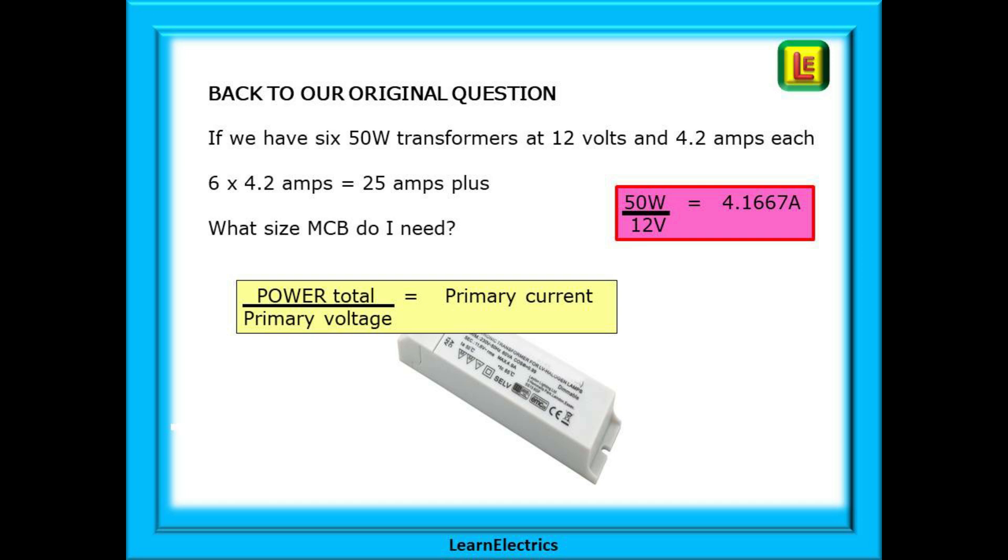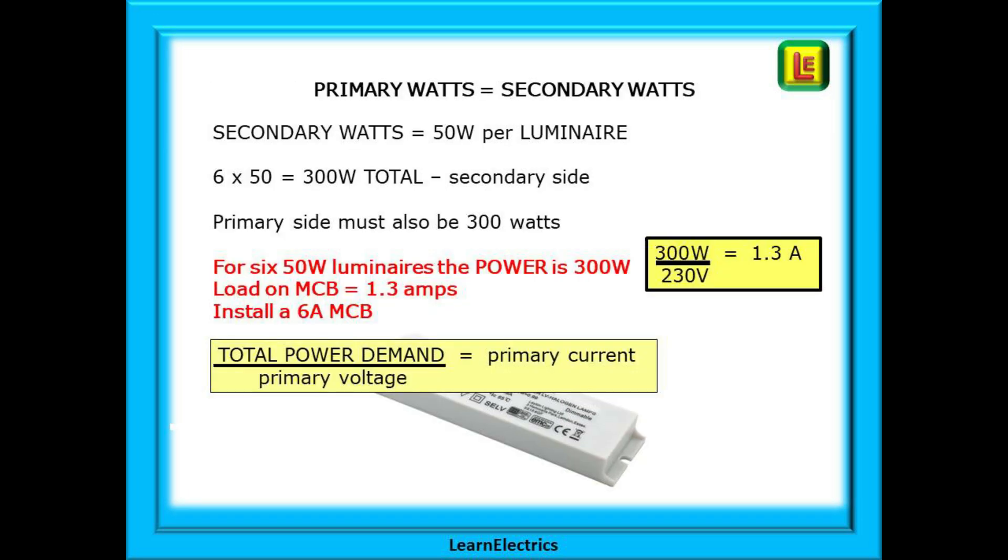Well, now we know that the power total divided by the primary voltage will give us the primary current. And if we know the primary current, we can decide on a suitable rating for the MCB in the consumer unit. On the secondary side, each luminaire is rated at 50 watts. There are six of them, so the total power is 6 times 50, or 300 watts.